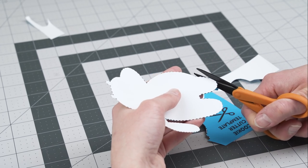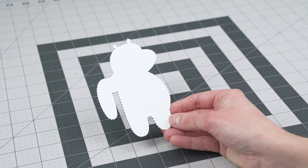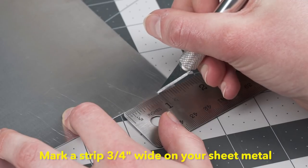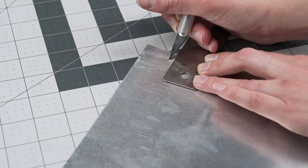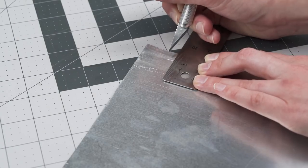I made his arm extra long so he can hug onto a mug later. Next, take your sheet metal and measure a three-fourths inch strip. Go up the sheet metal and mark that in three or four spots with an exacto knife.